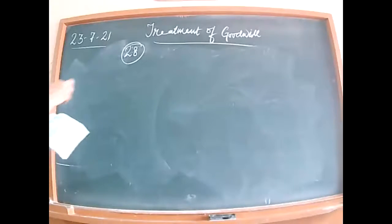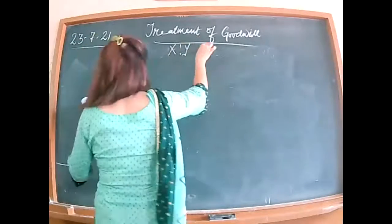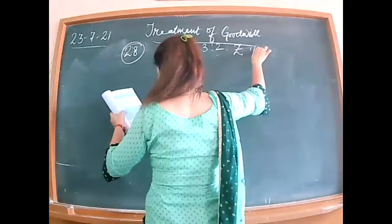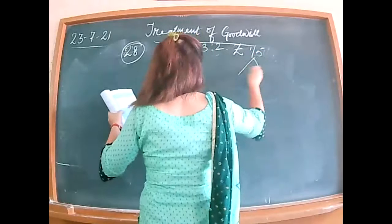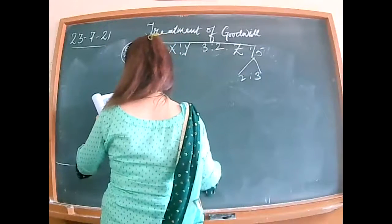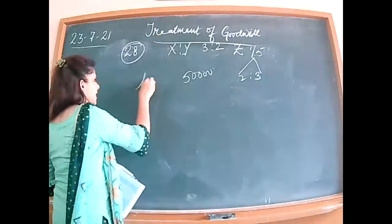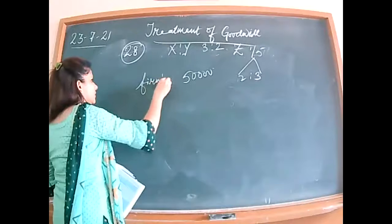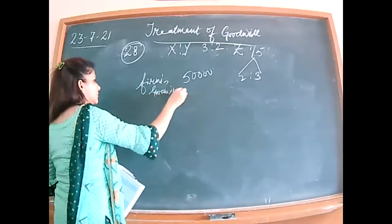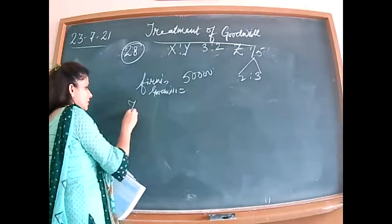Illustration 28: X and Y are partners in ratio 3 is to 2. Z is admitted for 1/5th share, taking from X and Y in a given ratio. The firm's goodwill is 50,000 — this is the firm's goodwill given in the question.